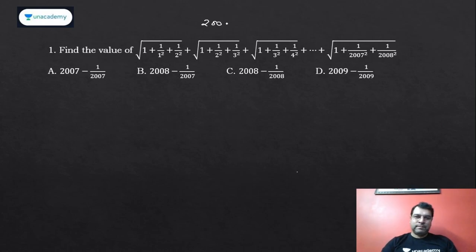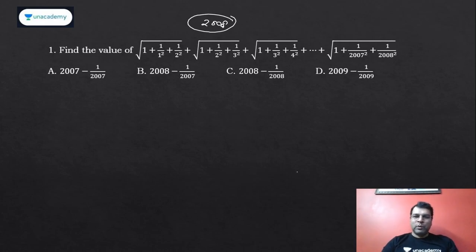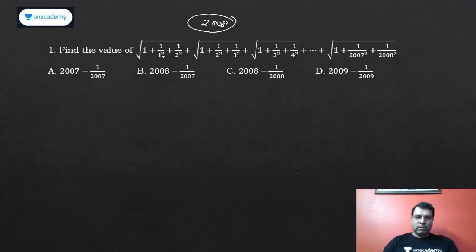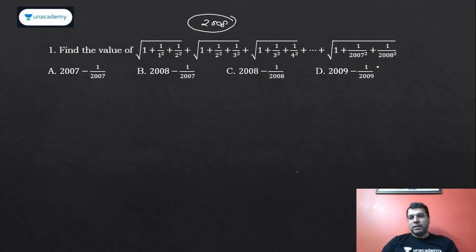We'll also cover the last two or three years. This is a good question, so I thought we should do it — it was also taken as one of the questions of the day. I'll do the normal basic trick shortcut. In such kinds of questions, whenever a certain number of terms are given, remember to put the value of n accordingly.